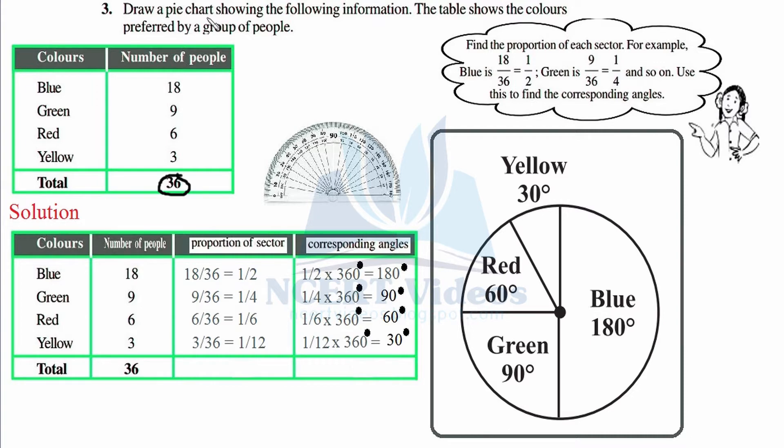The question directly says we need to construct a pie chart, which means we have to follow two processes: first find the sector angles, then using that central angle construct our actual pie chart. A hint is given: find the proportion of each sector and use this to find the corresponding angles.